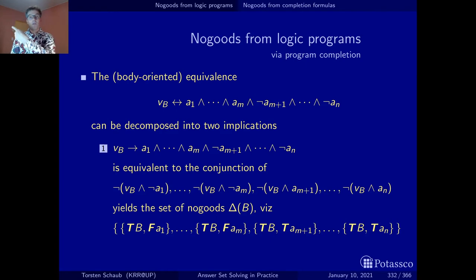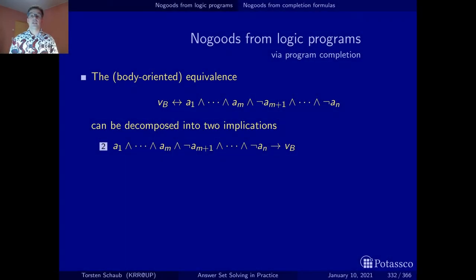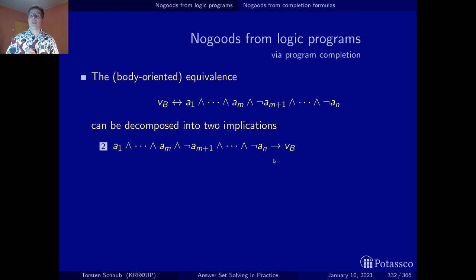Let's now look at the other implication that goes the other way around. This one says that whenever the positive and the negative body literals are true — or the conjunction of all of them is true — then the auxiliary variable representing the body must also be true. As before, we can translate this into a disjunction, and in this case we actually obtain a single one.